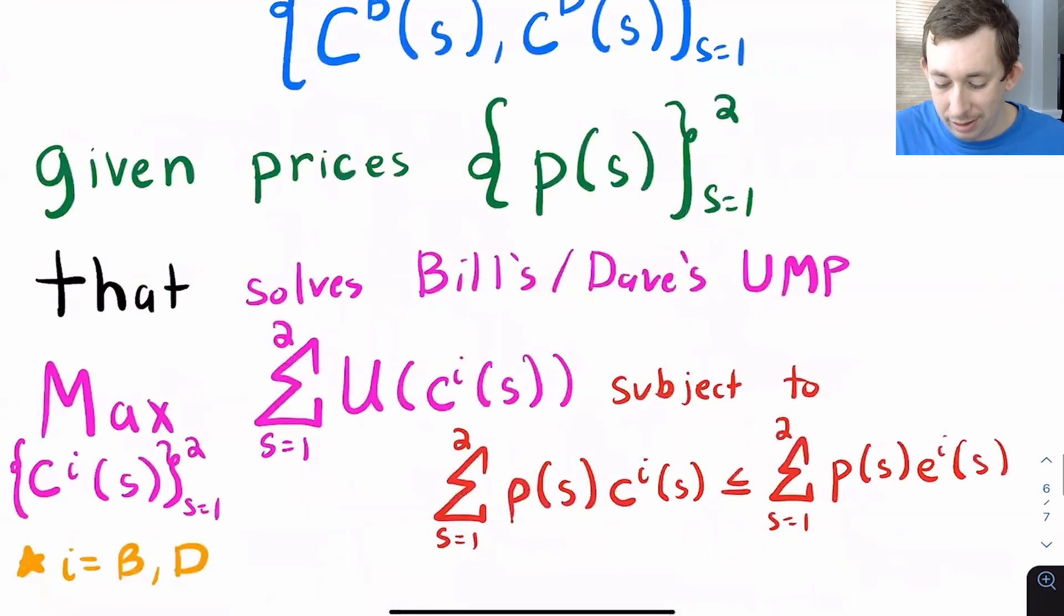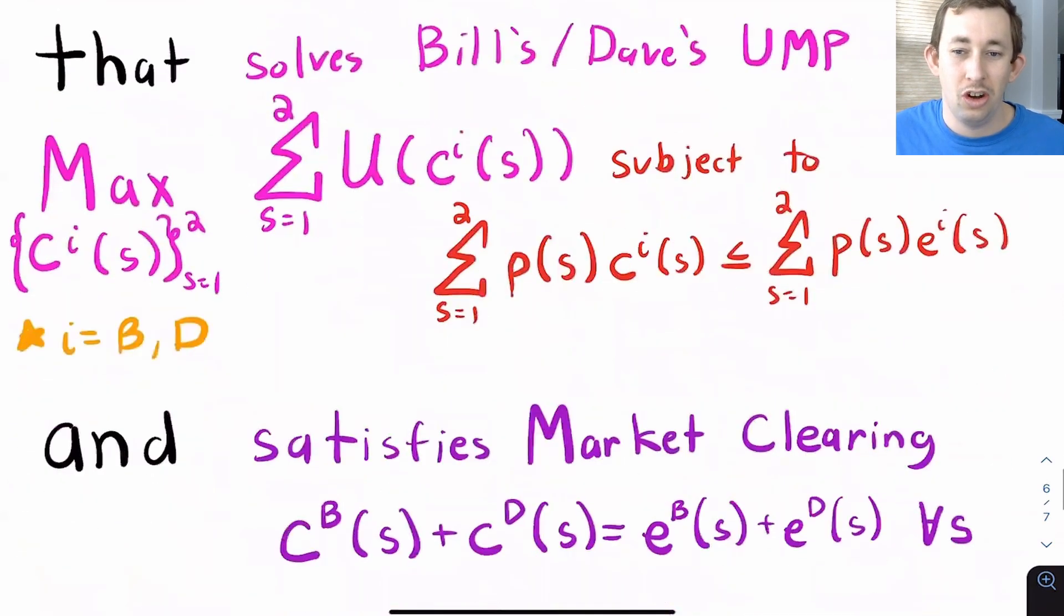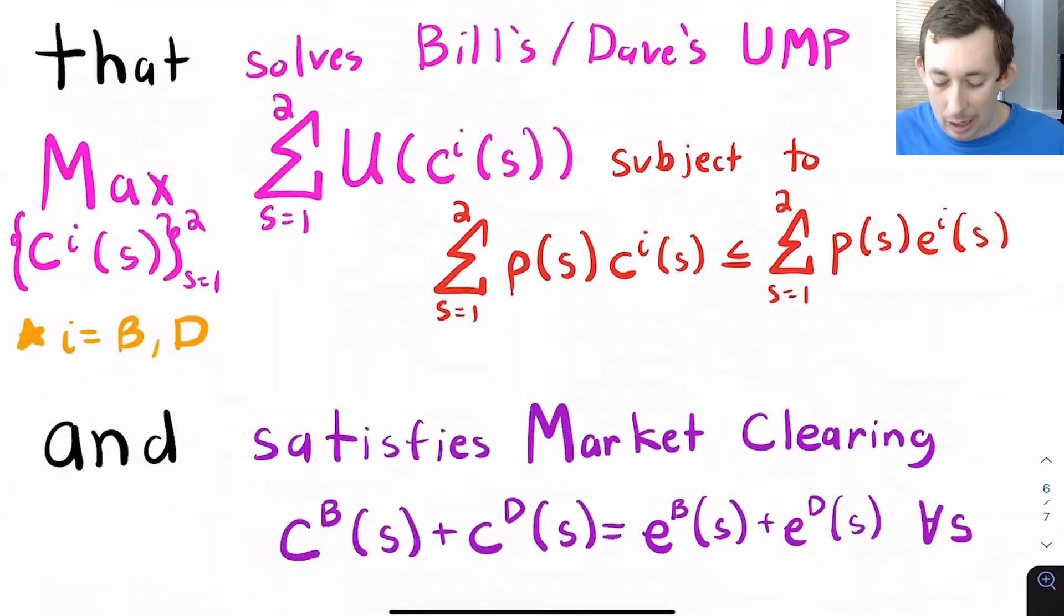So the way I've condensed that notation is just to say c^B of s, c^D of s for the state of the world going from one to two or from sun to snow. Given prices, we have different prices for different states of the world. So p of s for sunny and snowy. That allocation given those prices needs to solve Bill's and Dave's utility maximization problem.